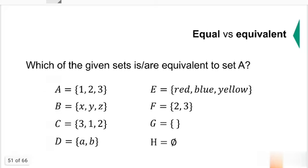Which of the following sets is or are equivalent to set A? Right now we're talking about equivalent sets. A has three elements. Which of the following sets also has three elements? So B, C, E. They also have three elements inside of them. So sets A, B, C, and E are equivalent sets.